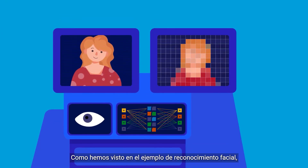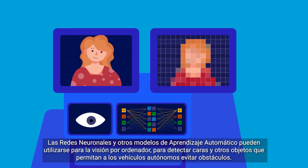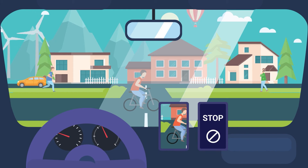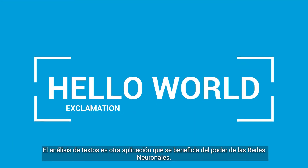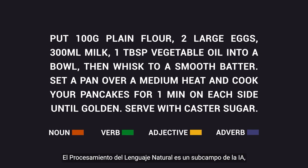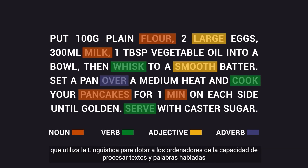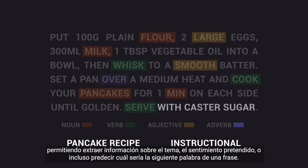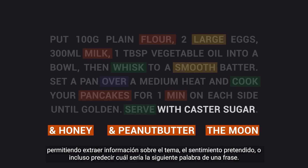As we have seen in the facial recognition example, neural networks and other machine learning models can be used for computer vision to detect faces and other objects, which will allow self-driving cars to avoid obstacles. Text analysis is another application that benefits from the power of neural networks. Natural language processing is a subfield of AI which uses linguistics to give computers the ability to process text and spoken words, allowing extraction of information about the topic, the intended sentiment, or even predicting what the next word in a sentence would be.